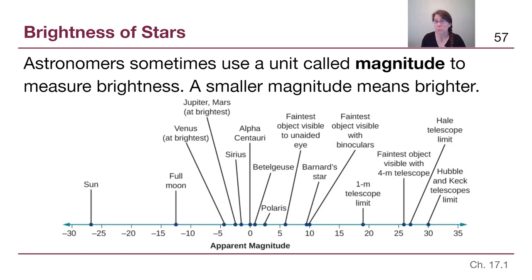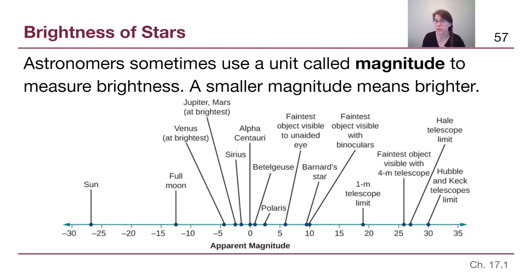Astronomers sometimes use a unit called magnitudes to measure brightness, so it is worth understanding what this unit is trying to tell us. The magnitude scale is based on star catalogs from the Greek scholar Hipparchus — his name came up briefly in our chapter two slides when we talked about who discovered precession, because that was Hipparchus also.